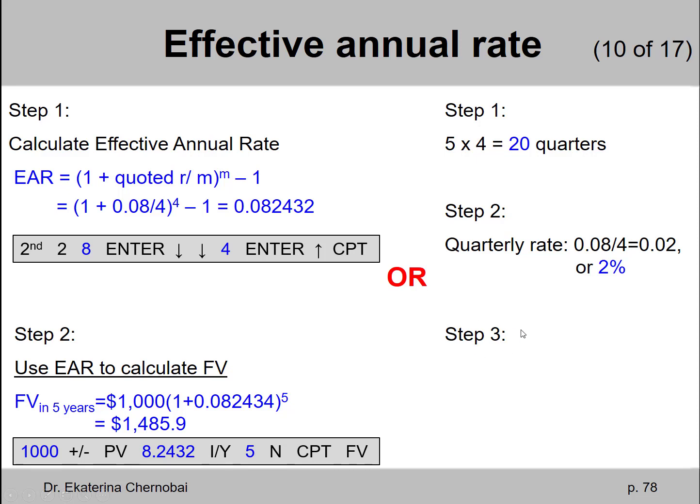Then every quarter you earn a 2% interest rate on your money which is 8% per year divided by 4 quarters. And then in the third step you find the future value after 5 years using 20 quarters for your number of time periods and 2% quarterly rate for the correct interest rate. And you find the same result.